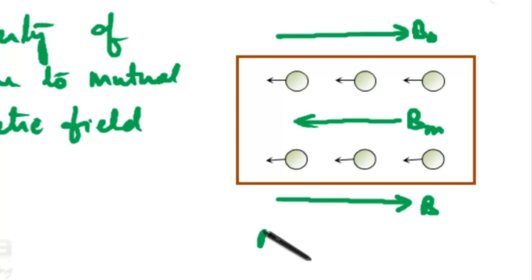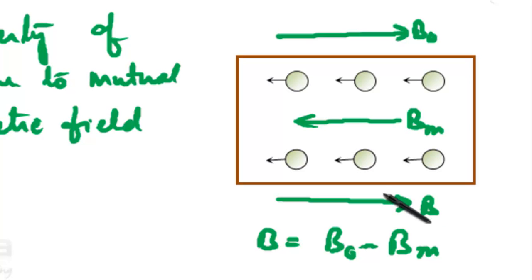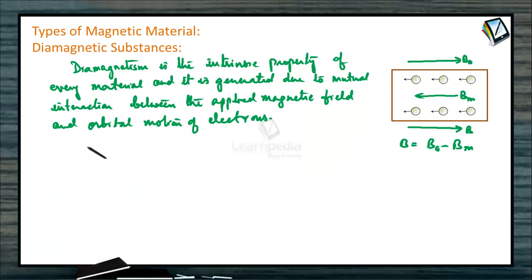So the total magnetic field here will be B = B0 minus BM. Magnetic moments are induced in all materials whenever a magnetic field is applied. Thus, all materials have the property of diamagnetism. However, if there is a permanent atomic magnetic moment, then para and ferromagnetism is much stronger than diamagnetism and the material does not show diamagnetic properties.